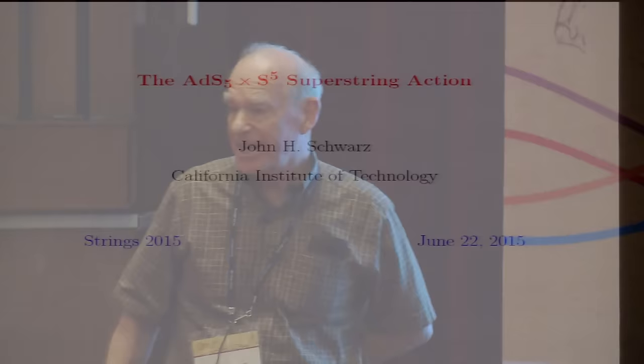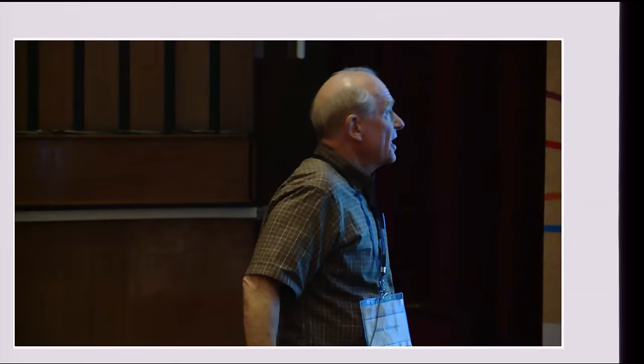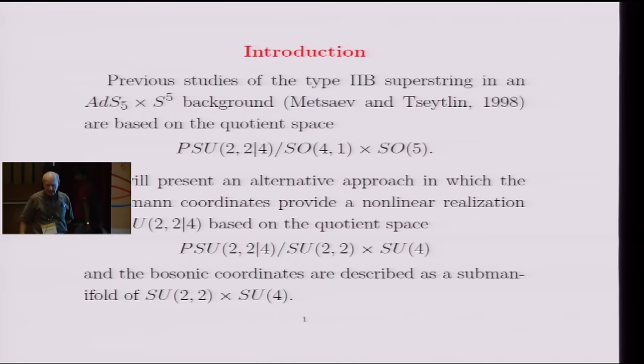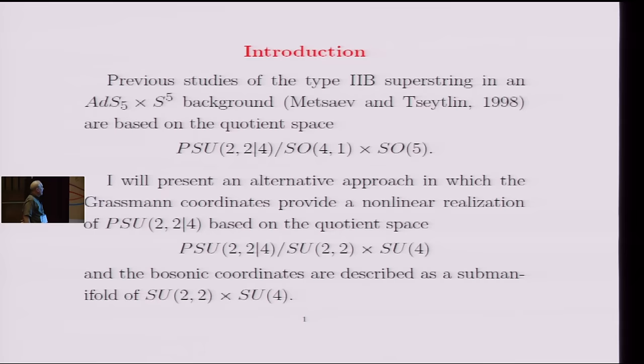So I've been thinking a little bit recently about the string theory side of the story. I have nothing to say about the gauge theory side. In the previous studies of the type 2B superstring in this background, starting with the work of Metsaev and Tseytlin in 1998, many people have contributed to this. I just mention them because of the first example.